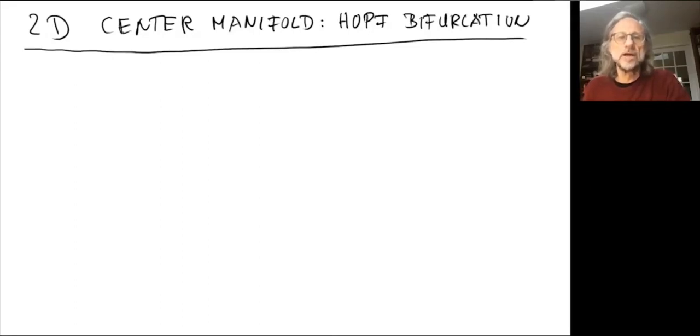So far, we have only looked at situations where we have a single eigenvalue that goes through zero, meaning it's a real eigenvalue. That generated a one-dimensional central manifold, and we got various kinds of bifurcations. Well, in general, there could be multiple eigenvalues that go through zero, or it could be a complex pair. In both cases, the central manifold would actually be not one-dimensional, but higher dimensional.